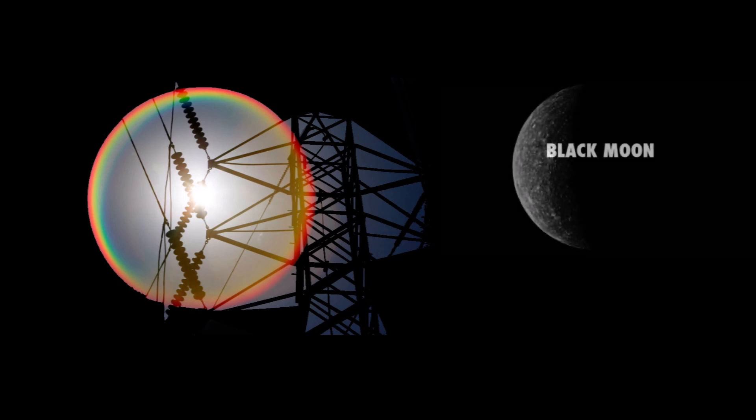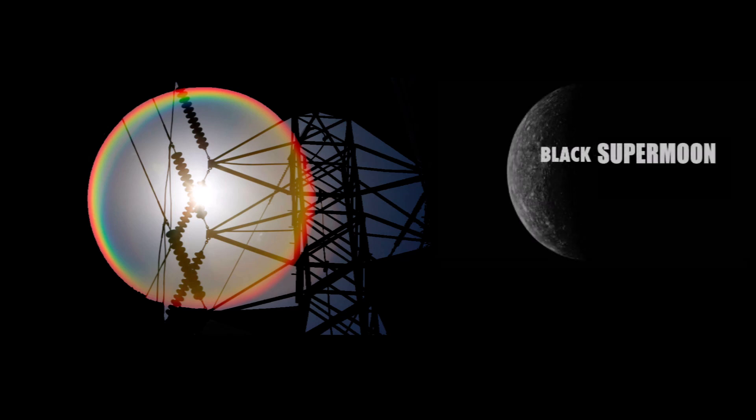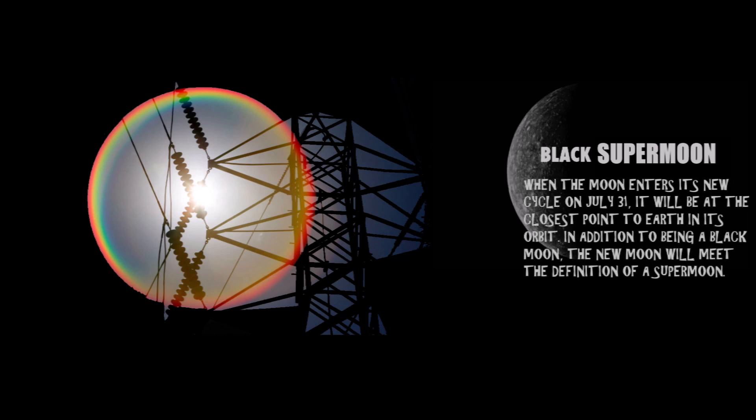Then there is the appearance of a rare black moon, which of itself would not be associated with solar coronas, except that this appearance coincides with a supermoon. According to the Farmer's Almanac, the black supermoon will be at its closest point to the earth and will darken the sky on July 31st, and this will allow for incredible stargazing.